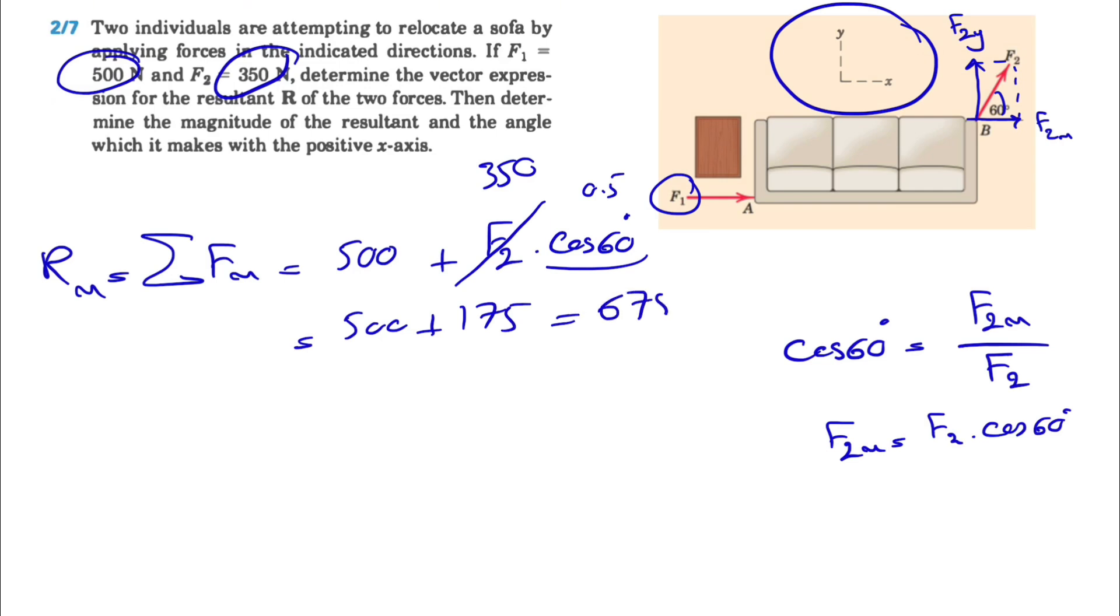We found the Rx. Now we need to find the y component, which is the sum of all forces in y direction. Obviously the F1 has only one x component, but F2 has a y component. This time F2y will be F2 times sine of 60 degrees. If we calculate this with a calculator, this is coming from the same thing. We'll only have sine of 60, and if we calculate this we'll get 303.1 newtons.